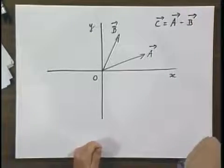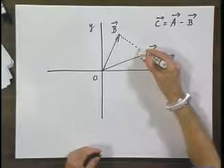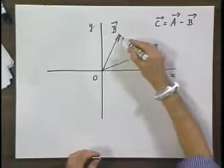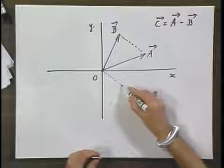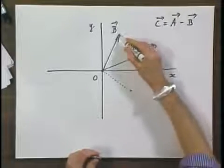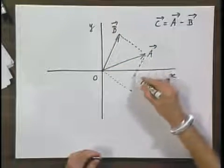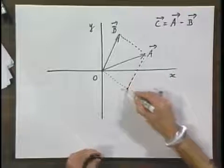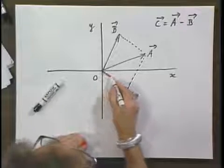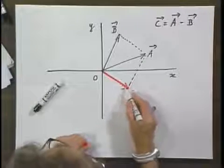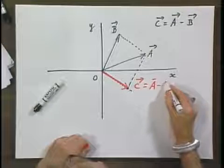Now I can construct a parallelogram by drawing this line from B to A, draw a parallel line through the tail of B, and where these two intersect, this is now my vector C, which is A minus B.